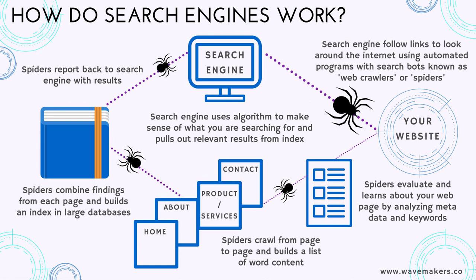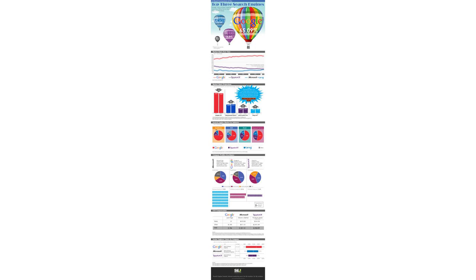In the late 1990s, search engines such as Google, Yahoo, and Bing emerged, revolutionizing the way we search for information online. These search engines use complex algorithms to crawl and index web pages, making it easier for users to find what they are looking for.